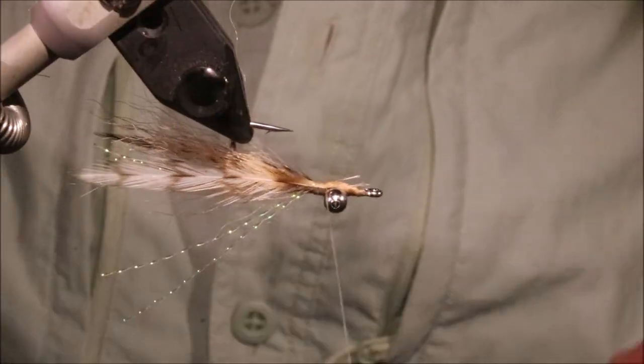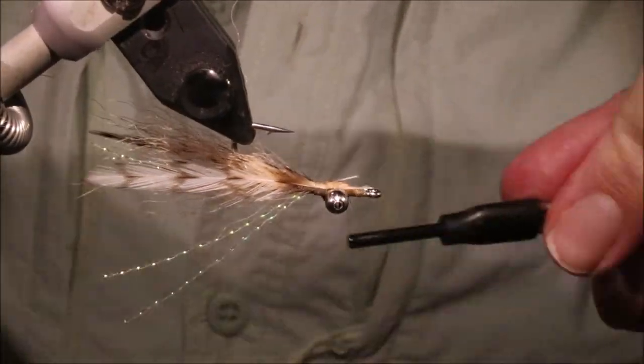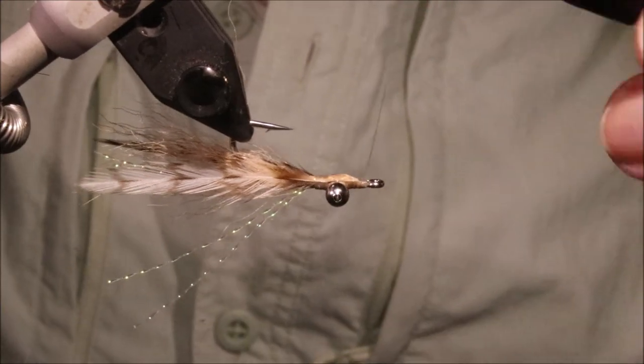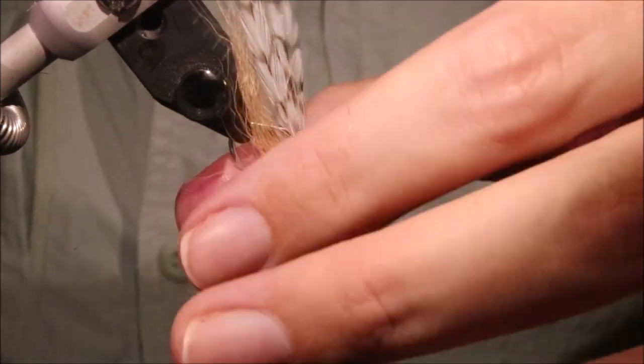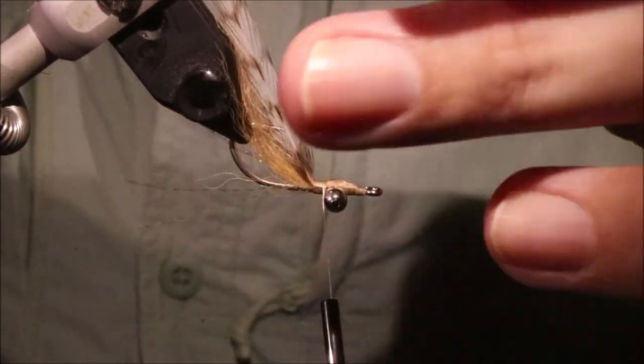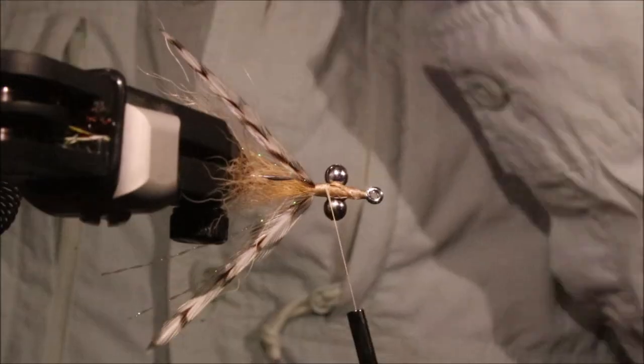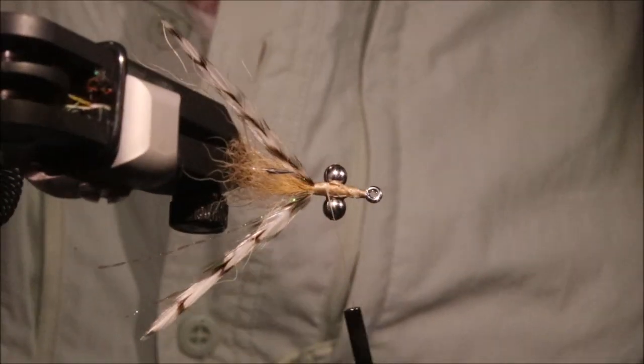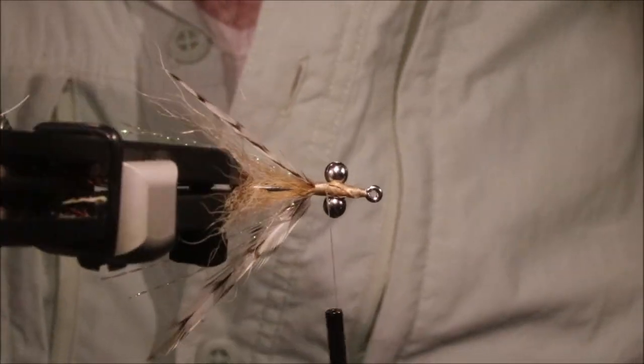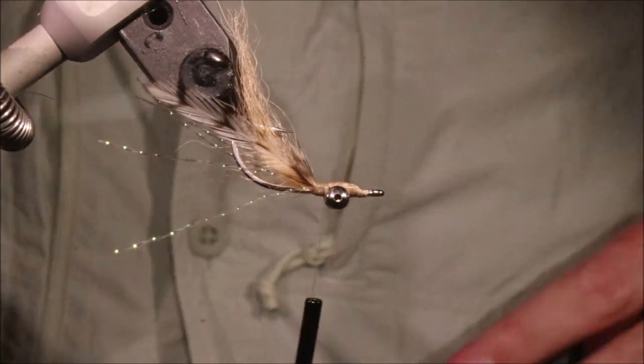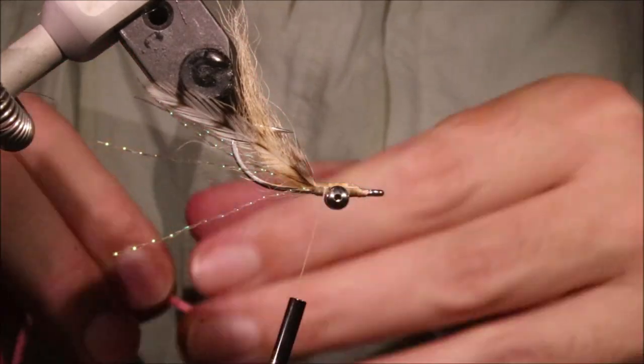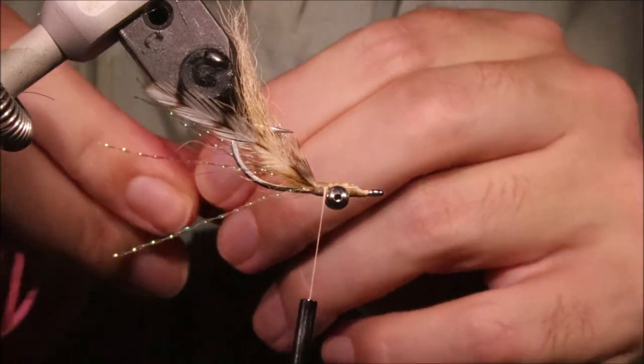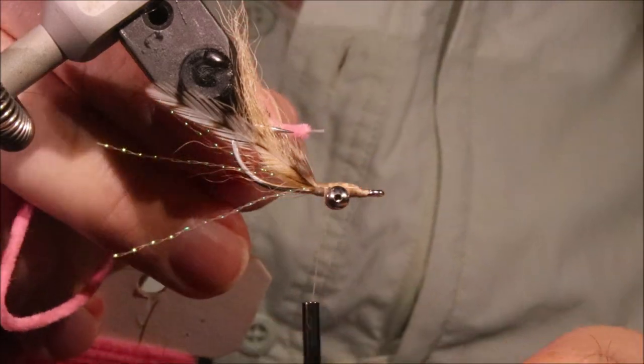And I'm just going to do the same again. I'm going to secure this right in tight to the bead chain and then come to the front, or just tie over the stems. So I've now got this, basically. You can see if I turn it that way, they're really splayed. Which is, you know, you want these hackle tips curving away so that they move when you strip the fly.